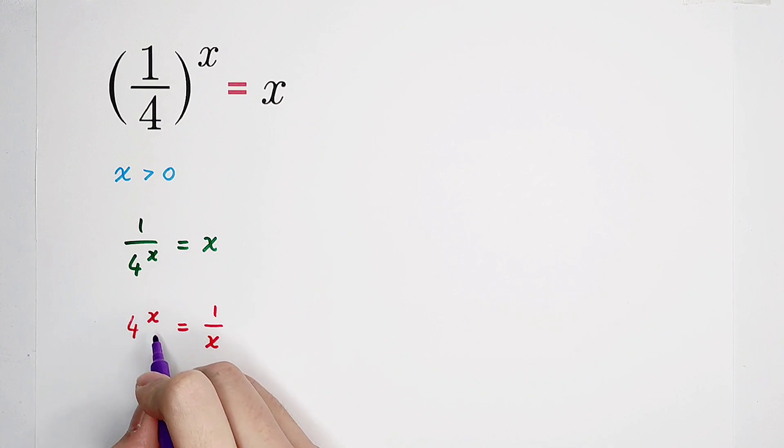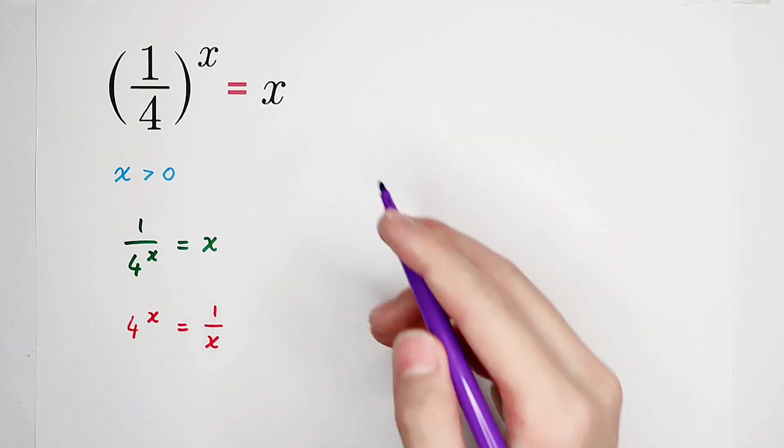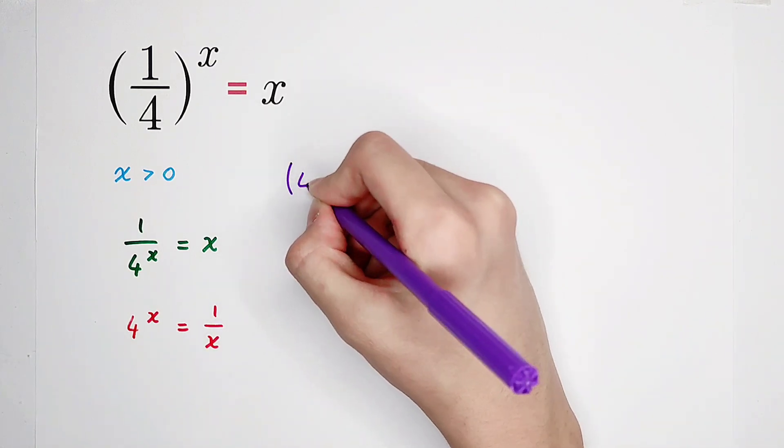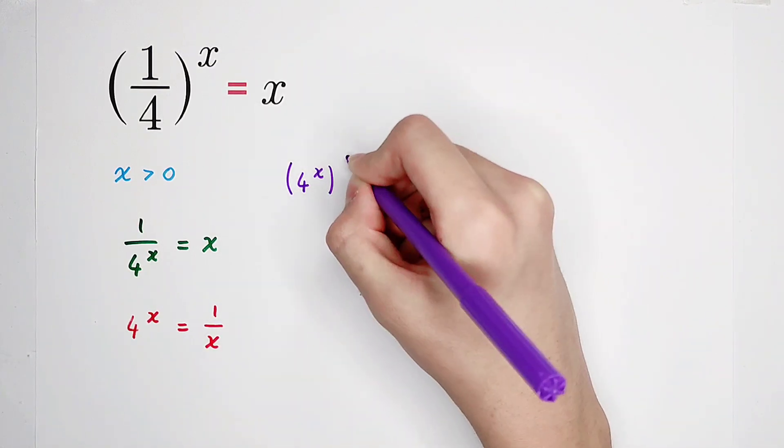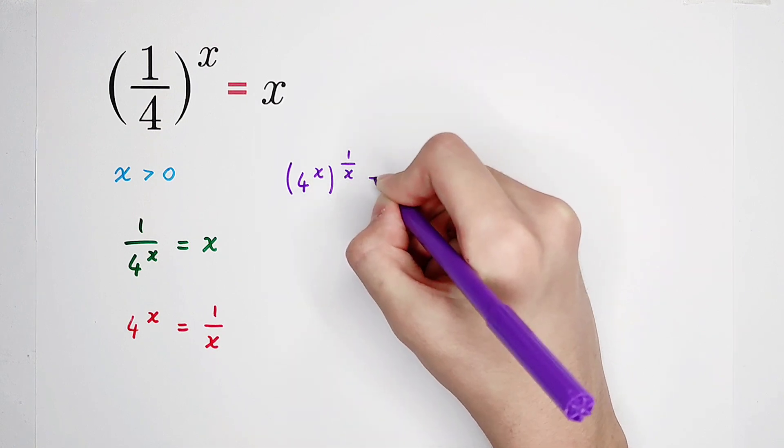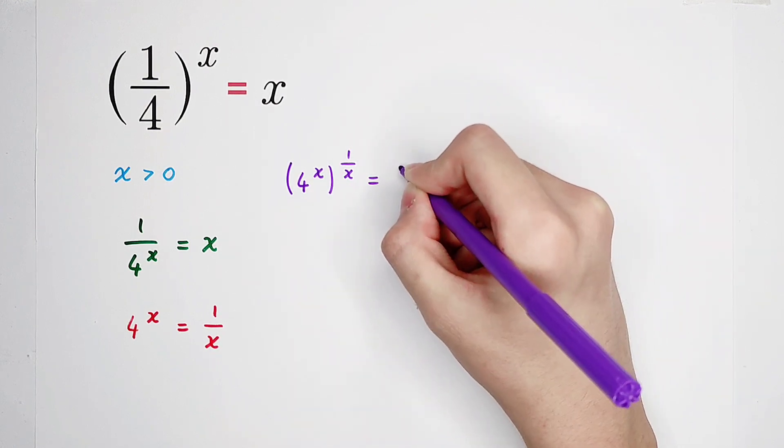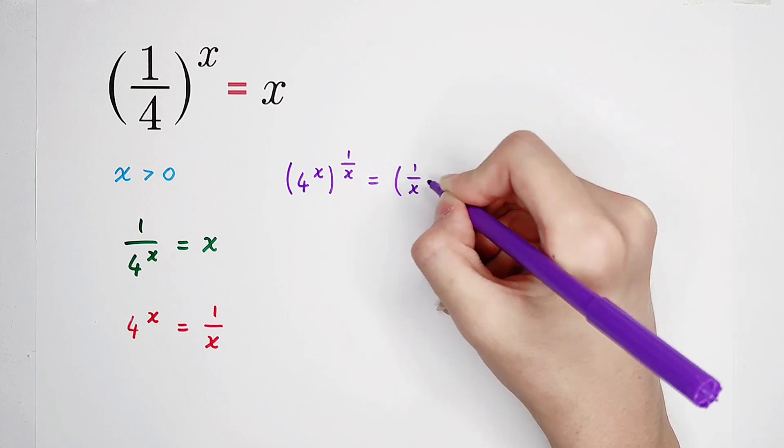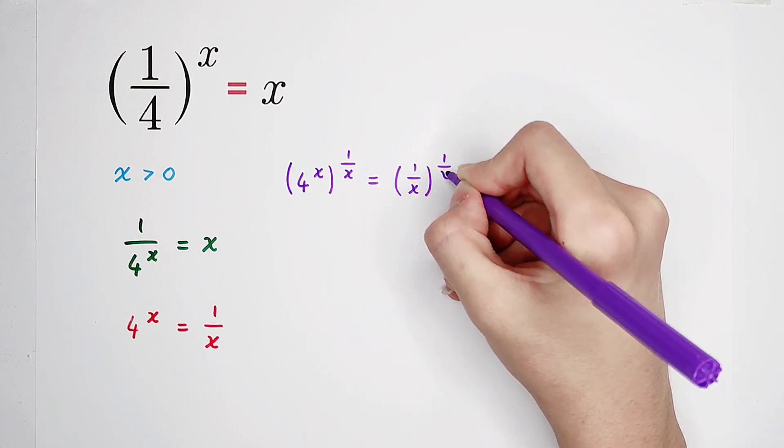Then, you see, this exponent x is in the way. Now we can raise both sides to the power of one over x. The left-hand side will be four to the power of x to the power of one over x. And the right-hand side, one over x to the power of one over x.